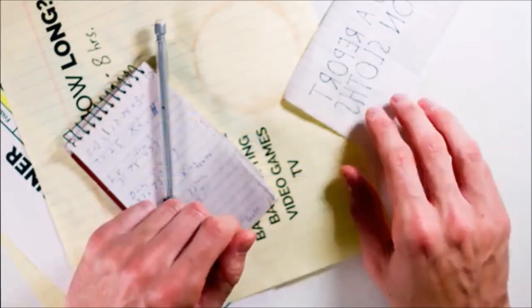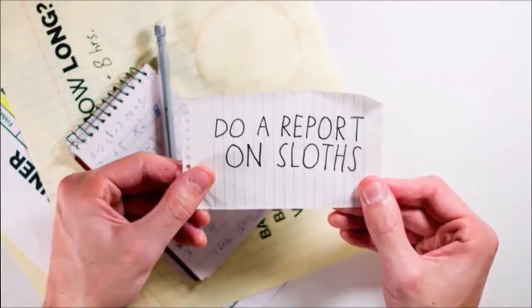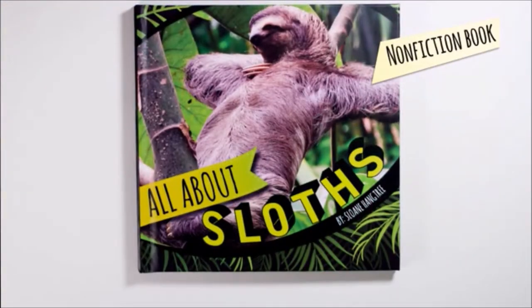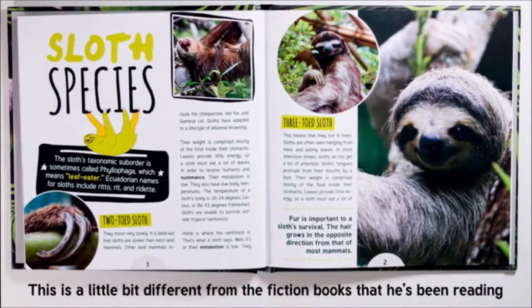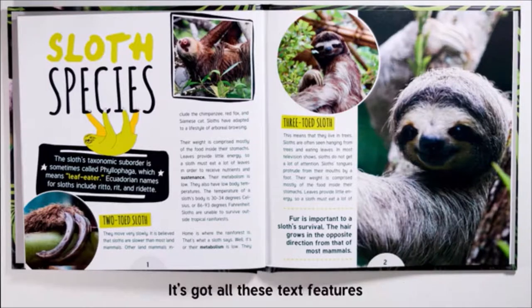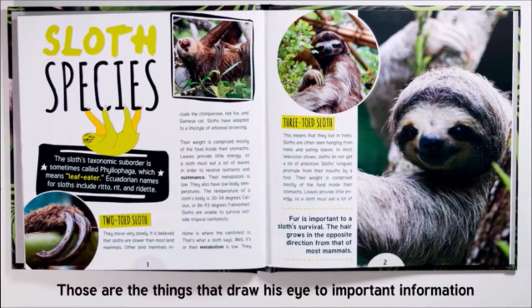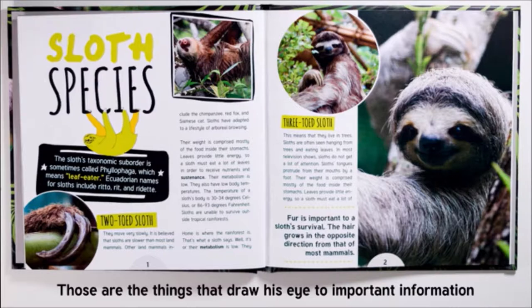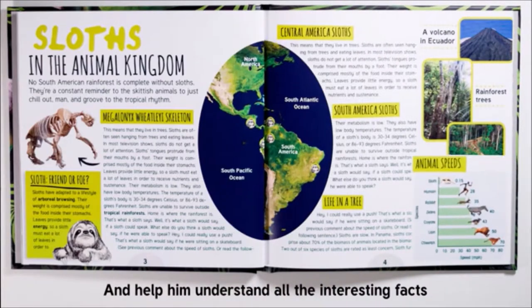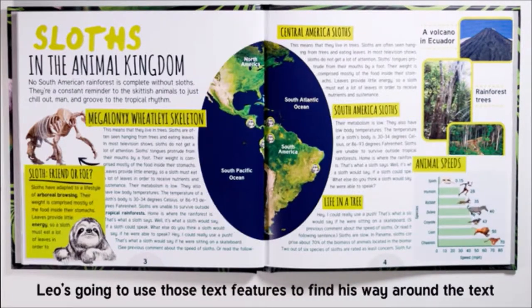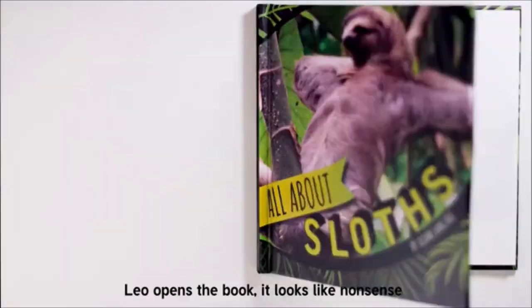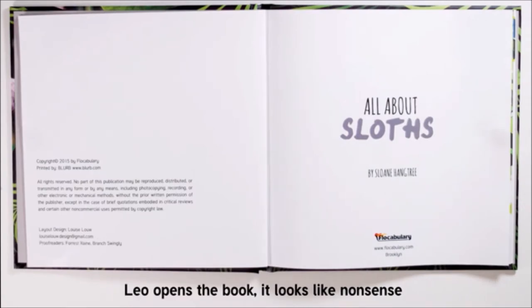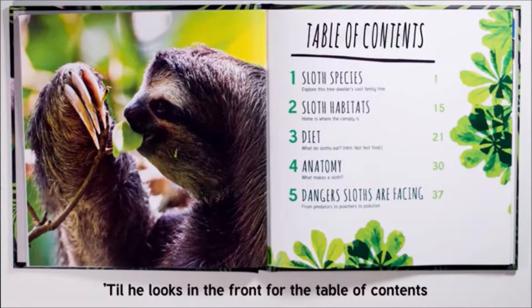Leo here just found out he has to do a report on sloths. He checks out a nonfiction book. The title is all about sloths. This is a little bit different from the fiction books that he's been reading. It's got all these text features. Those are the things that draw his eye to important information and help him understand all the interesting facts. Leo's going to use those text features to find his way around the text. Leo opens the book. It looks like nonsense. Till he looks in the front for the table of contents.